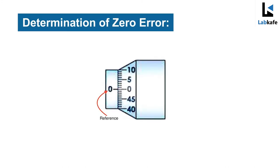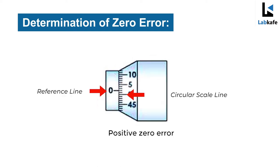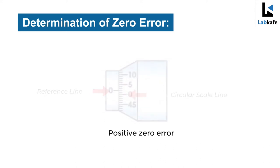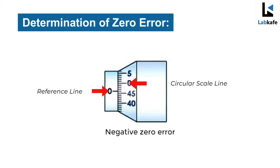The zero error is said to be positive if, on bringing the spindle in contact with the stud, the zero of the circular scale lies to the bottom of the reference line. Owing to this error, the measured reading will be systematically bigger than the actual value, hence the error is to be subtracted from the observed reading. If on the other hand the zero of the circular lies on top of the reference line, it is said to be a negative zero error; the measured reading will be systematically smaller than the actual value, hence the error is to be added to the observed reading.